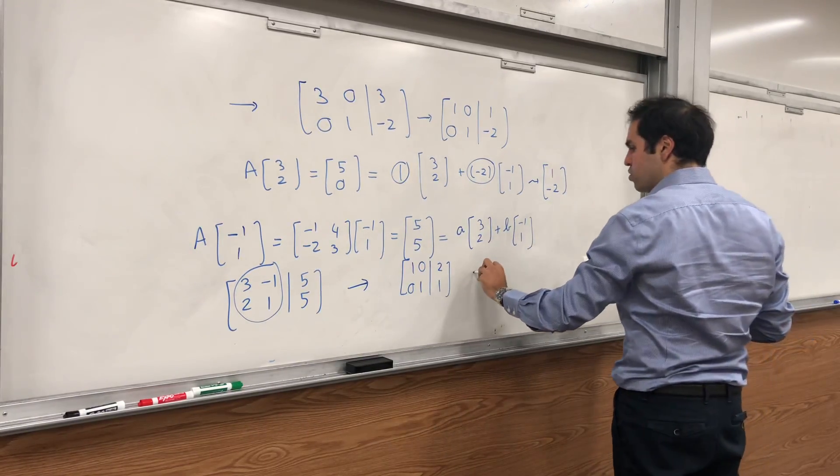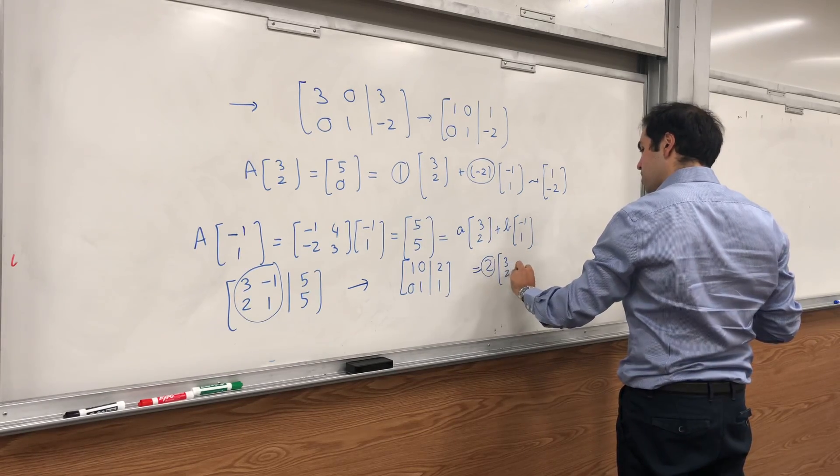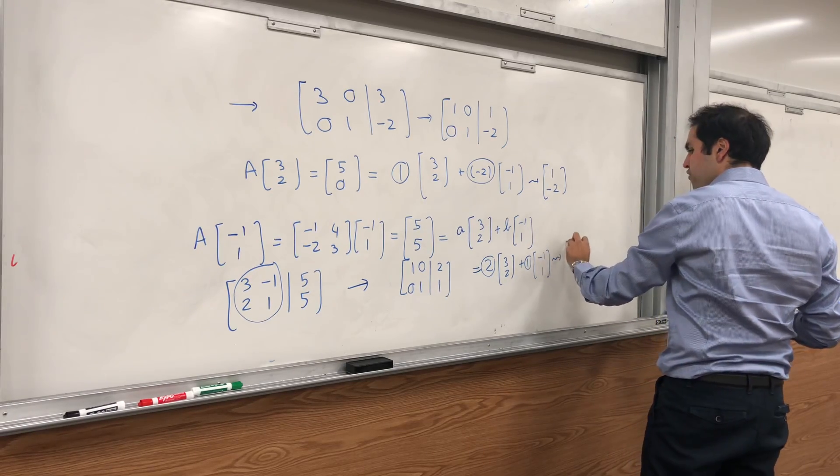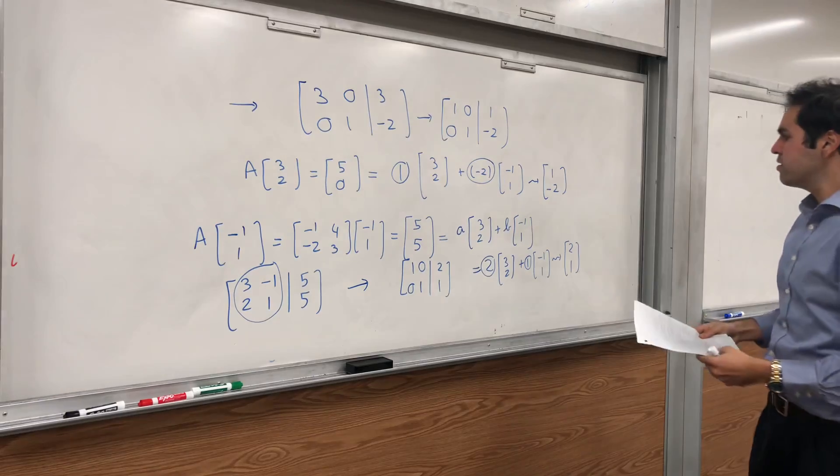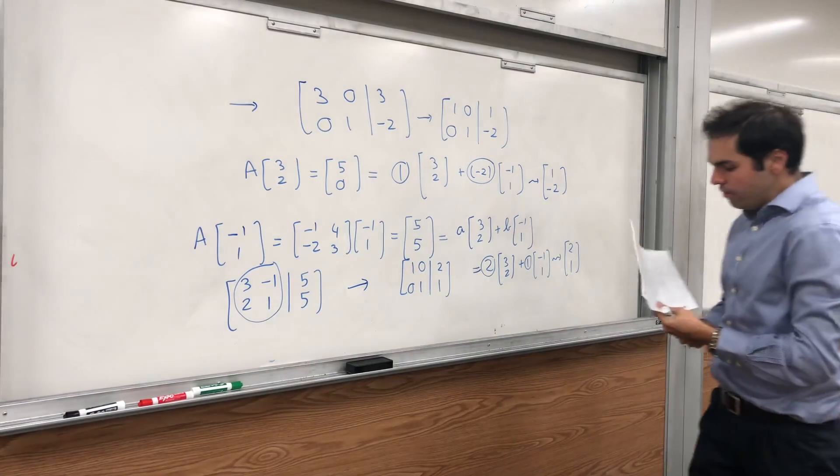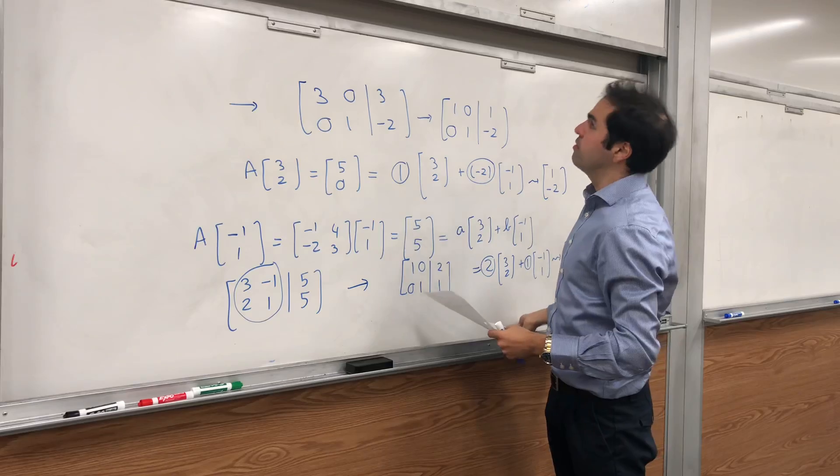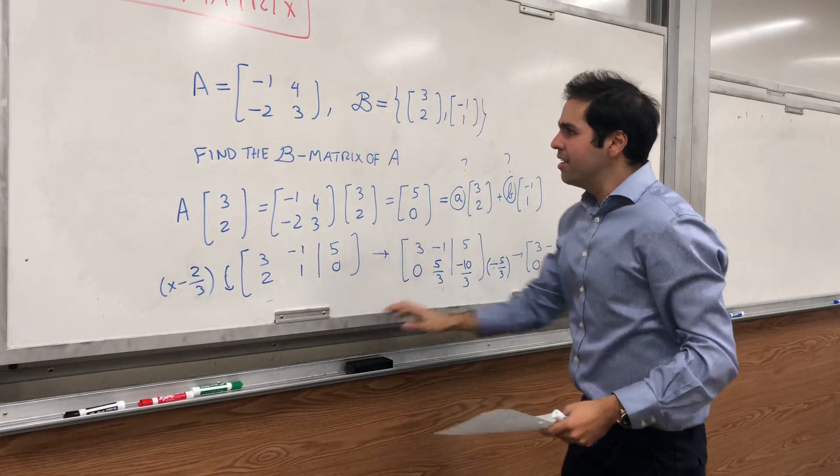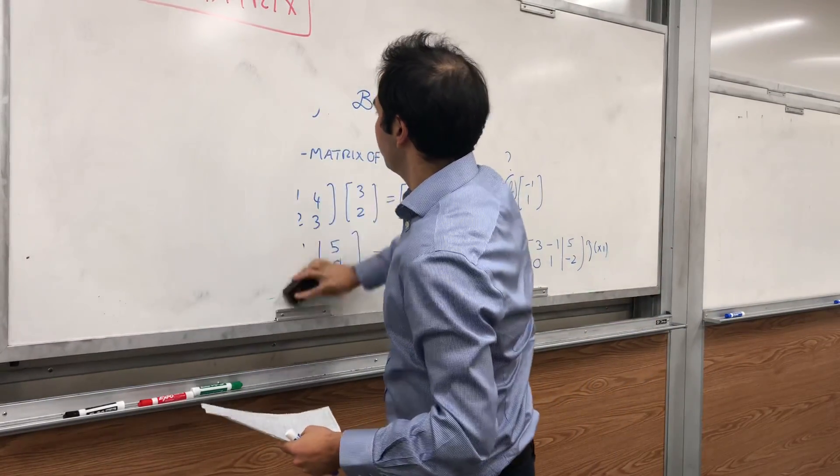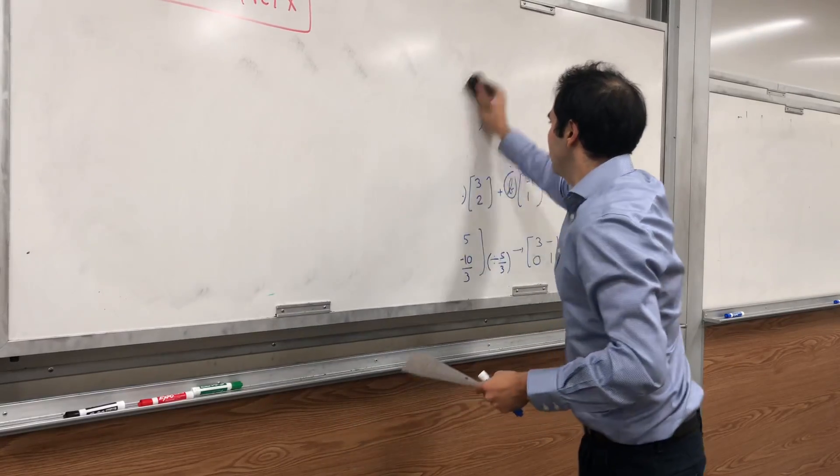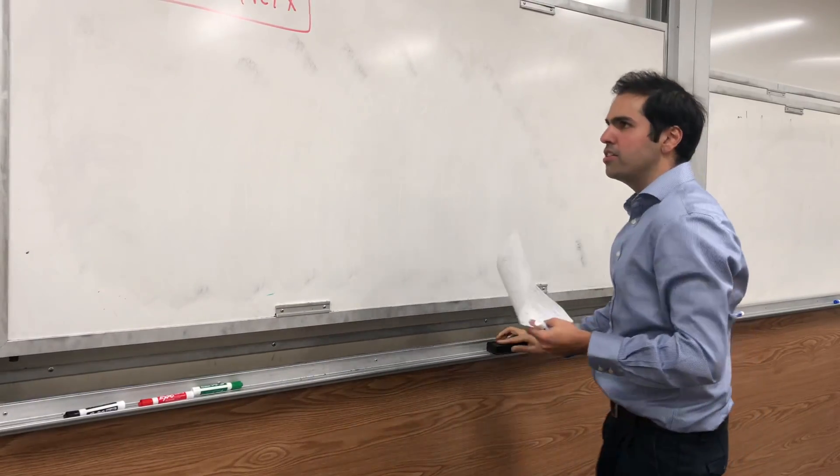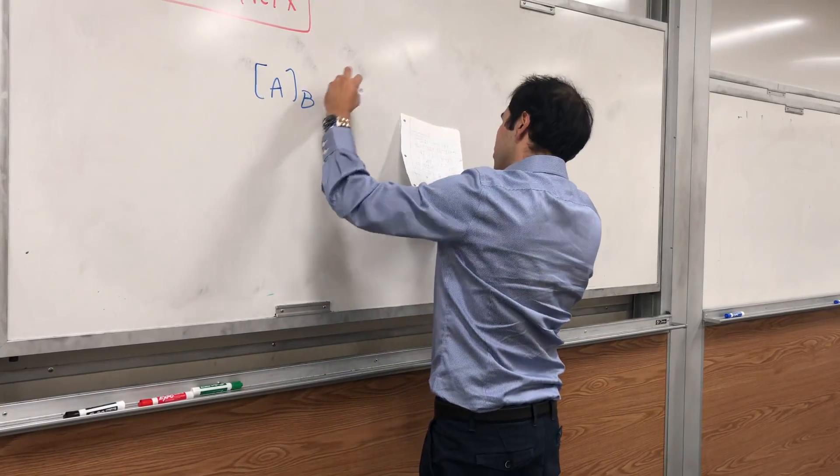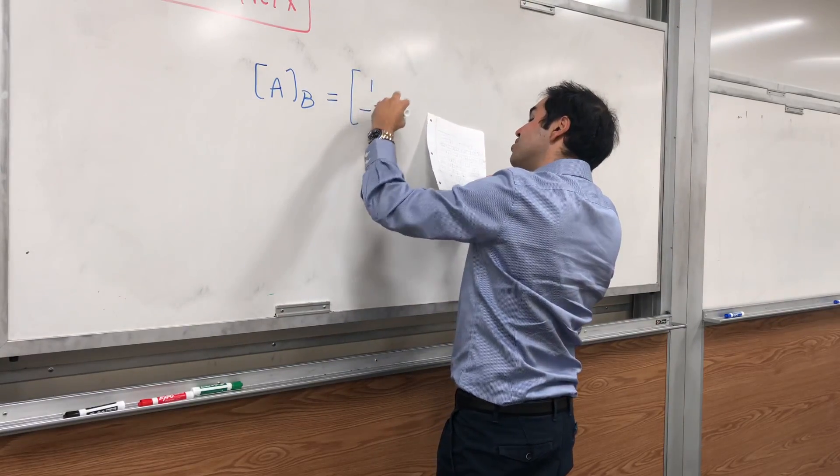Which tells you the answer is 2 times (3, 2) plus 1 times (-1, 1). And therefore, the second column of your matrix is [2; 1], which tells you, in the end, what is the B-matrix of A. It's just the result you get by putting those two vectors together. So let's write it as follows. So A_B equals [1, 2; -2, 1].